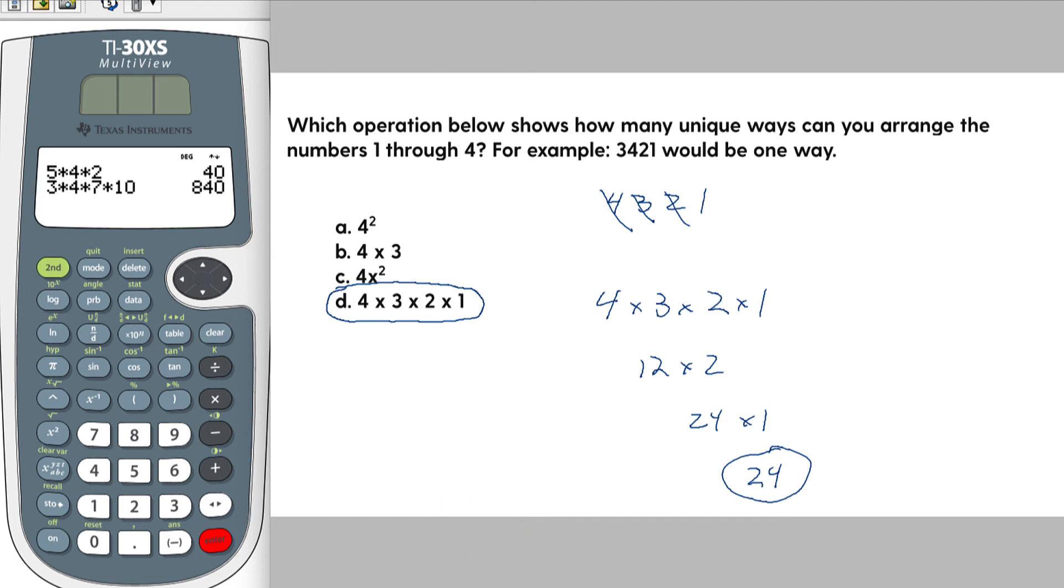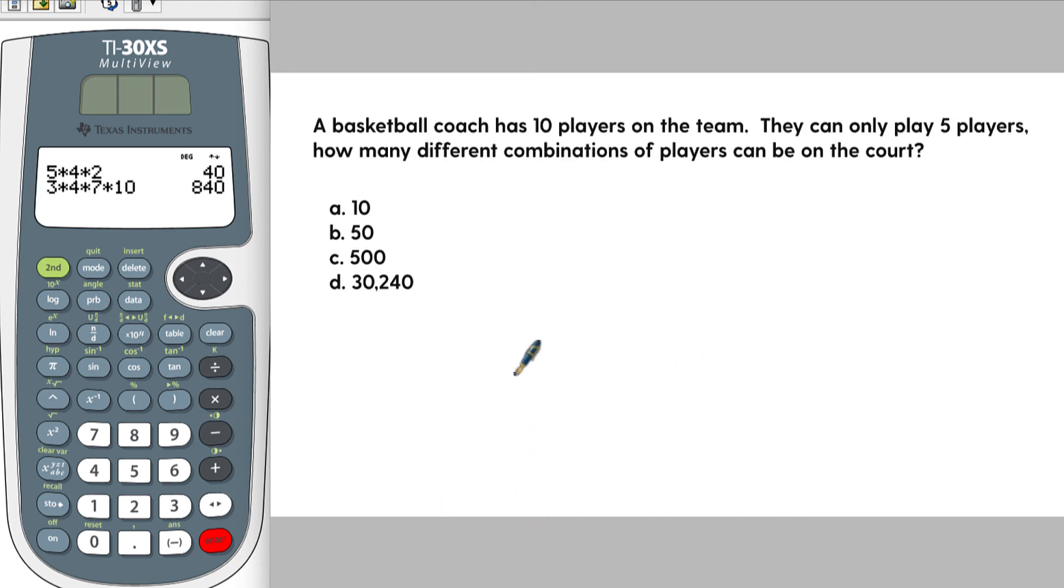So let's do another one. A basketball coach has ten players on the team. They can only play five players. How many different combinations of players can be on the court at the same time? Alright, so again, if you were to kind of number each player.